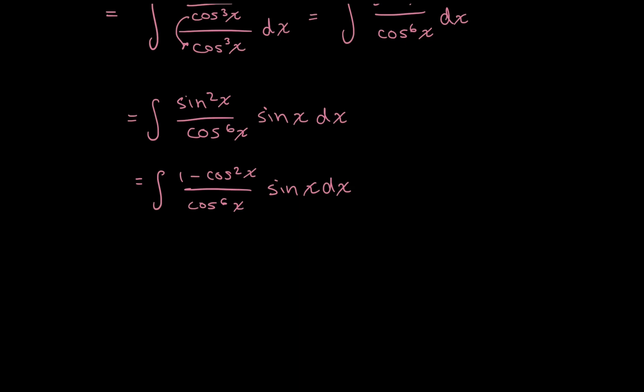Now what I have here is a nice setup for u substitution. Notice that my sine x dx has just one copy of sine. And that was intentional because to do my u substitution, I want u to be equal to cosine x. And so my du is going to be equal to negative sine x. That negative is not that big of a deal because I can very easily deal with it by just multiplying by negative on both sides. So I have negative du is equal to sine x dx, which matches what I have in this integral over here.